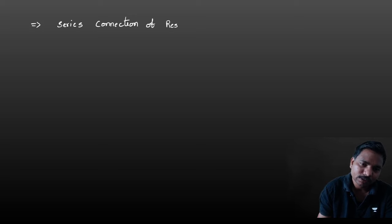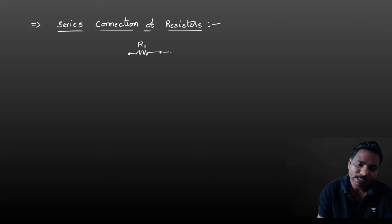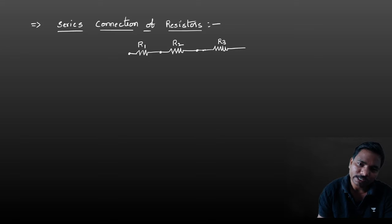First of all, series connection of resistors. That means if we connect resistors in series — this is the resistor symbol. I am going to connect resistors in series. One resistor's end is connected to another resistor's starting — that is R1. Then you can say that is a series connection — R2. And this end is connected to the starting of another, that is R3. If you connect like this, this is a series connection.